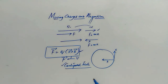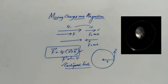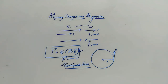In class 11 you would have studied that planets revolve around the sun because the centripetal force is provided by the gravitational force of attraction between the sun and the planet. Similarly, an electron revolves around the nucleus because the centripetal force is provided by the electrostatic force of attraction between the positive nucleus and the electron.